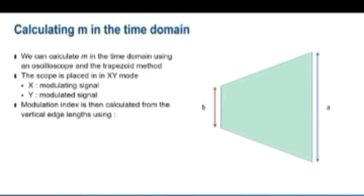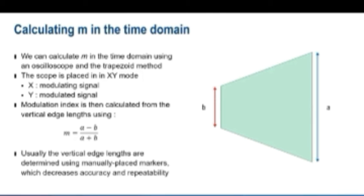Scopes generally do not have automatic measurement functionality for AM modulation depth. Edge lengths must be determined using manually placed markers. This can decrease measurement accuracy and reliability.